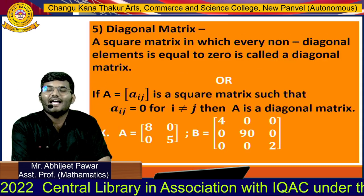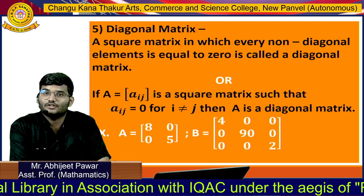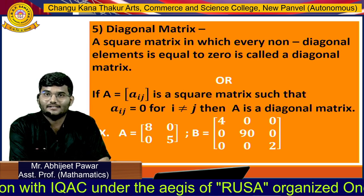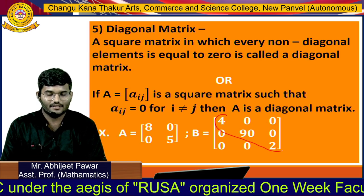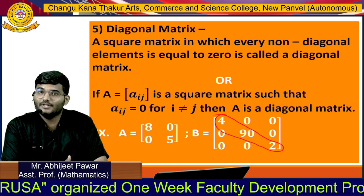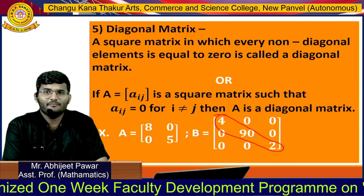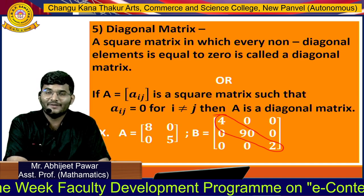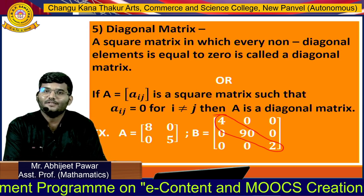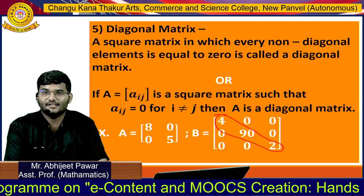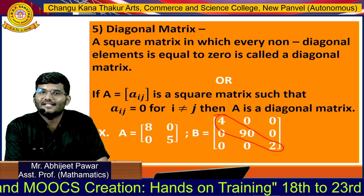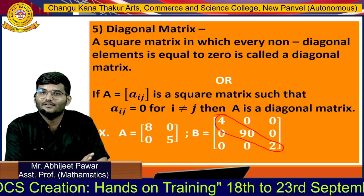Moving further, we have the diagonal matrix — a matrix in which every non-diagonal element is equal to zero is called a diagonal matrix. In the example, let me highlight: this is the diagonal. Diagonal elements can be negative, positive, or it might even be zero. But I have a question — if the diagonal element is zero, please comment in the video. Can zero be a diagonal element? That is a genuine question. In a diagonal matrix, the non-diagonal elements must be zero.